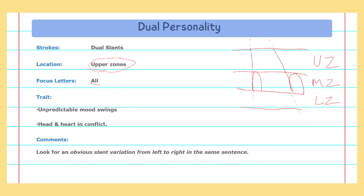The traits observed include unpredictable mood swings and the head and heart not being in alignment, which is why decision-making is difficult. The key indicator in handwriting is variation in slant direction — left to right — within the same sentence.